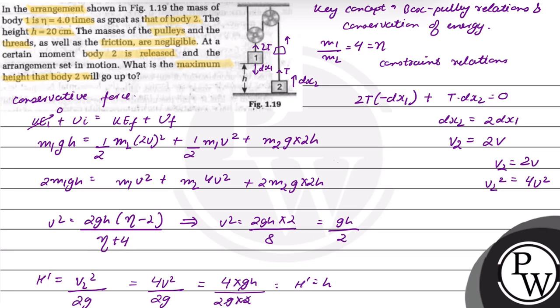The maximum height that body 2 will go up to will be 2h + h'. We know h' = h, so the maximum height will be 3h. From the question it is given that small h is equal to 20 cm.